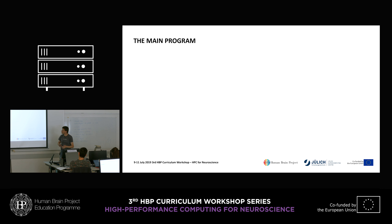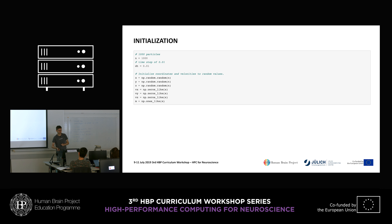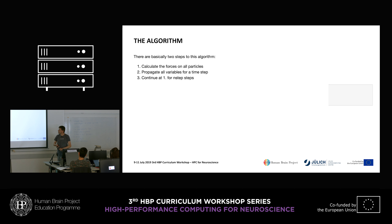Our main program first does some initialization: I take 1,000 particles, set a time step of 0.01, and initialize x, y, z coordinates to random values, velocities to zero, and mass to one. Then the algorithm does two steps: first calculate forces on all particles, then propagate all variables for a time step. If I wanted to parallelize this, where would I start? That's where profiling comes in.